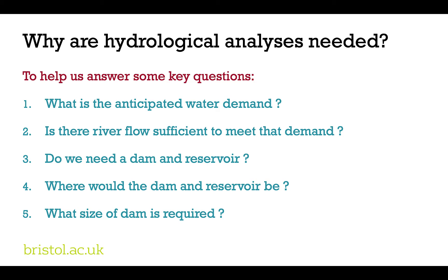The second question is whether there is enough river flow to meet the demand while maintaining the flow in the river and abstracting water for the town. To do that, we're going to have to create a synthetic river flow record for your particular dam site. We do that by using a downstream river flow gauge and applying a factor to it to create a synthetic river flow record. Once we've done that, we need to determine if we need a dam and therefore a reservoir in order to meet the demand, and I'll demonstrate that in a few moments.